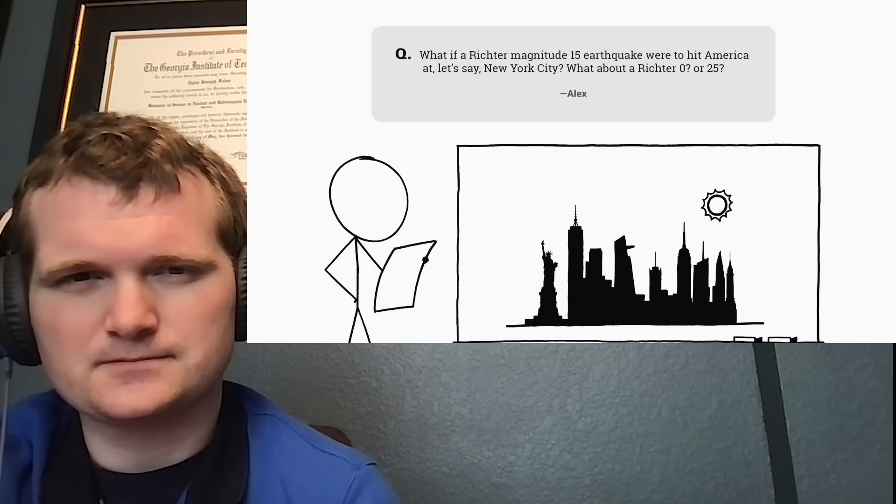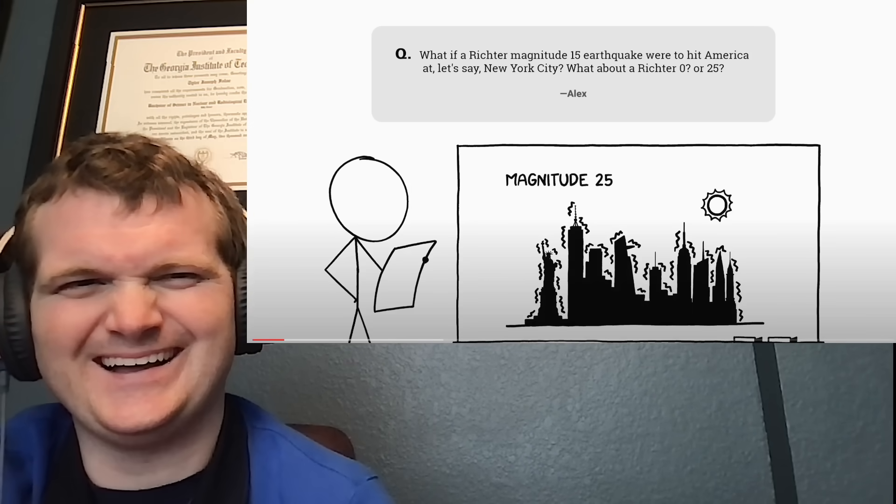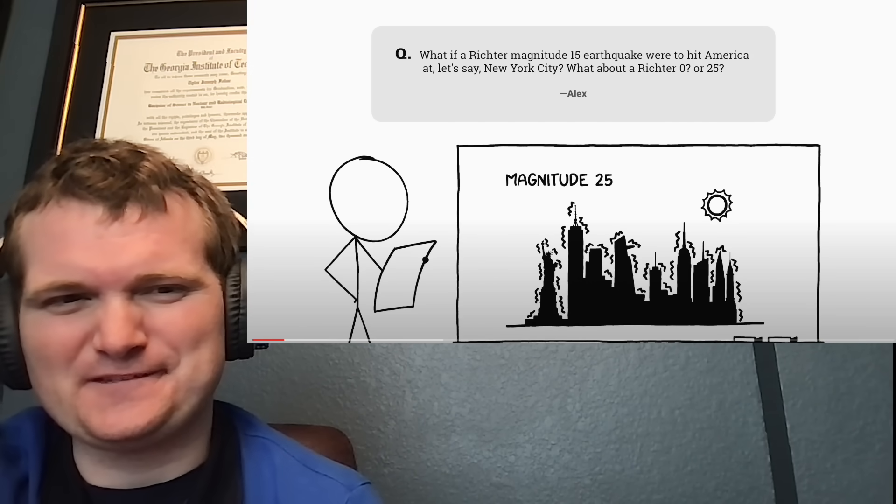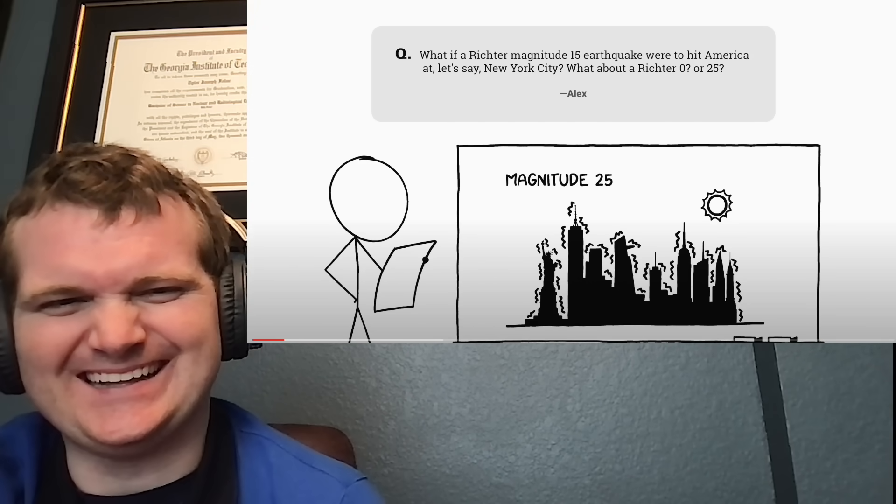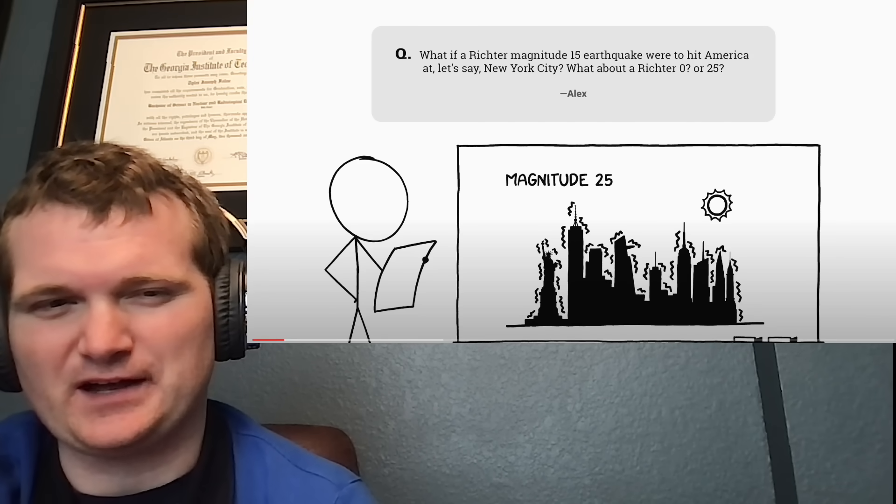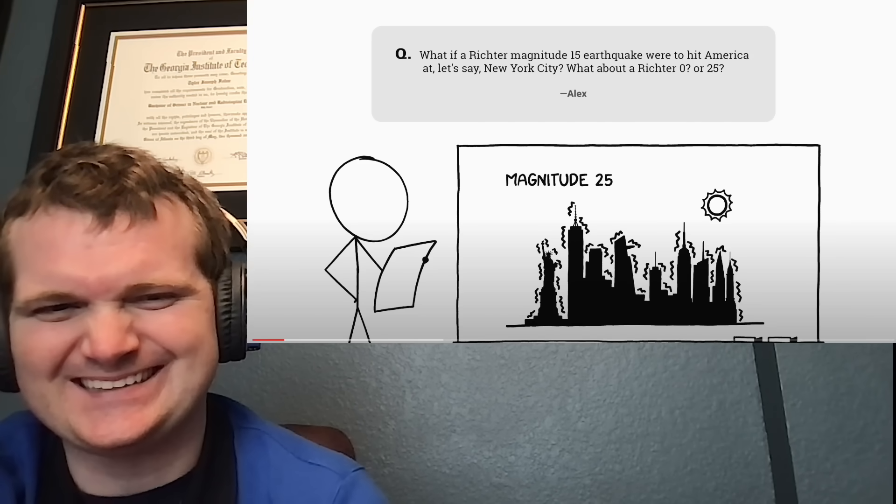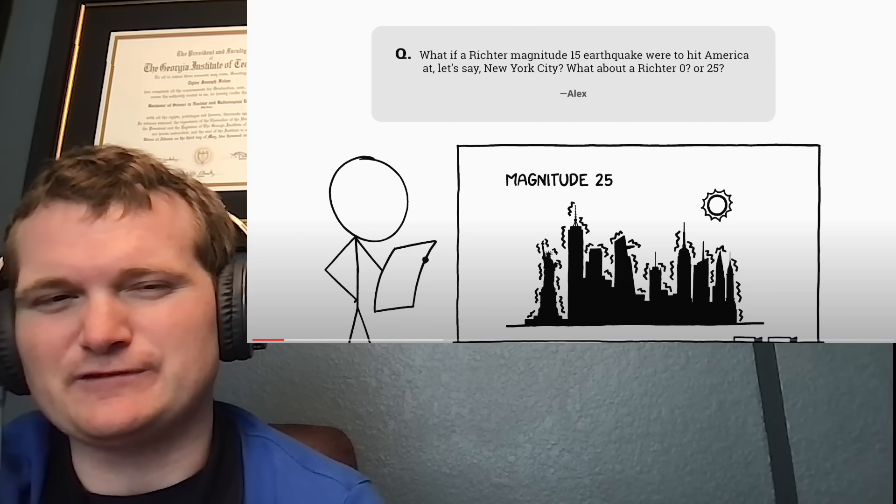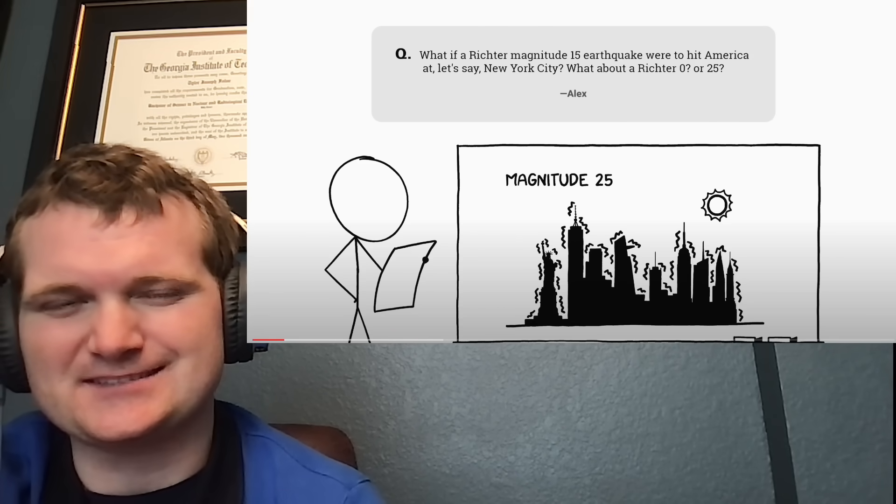This is a question from Alex who asks, what if a Richter magnitude 15 earthquake were to hit America at, let's say, New York City? What about a Richter 0 or 25? In New York City, good luck finding a fault line to even get you to 10. Zero would be tiny. 25, the Earth would not survive anything close to that, if you could somehow get it that high. So I guess a 25 earthquake wouldn't really make a whole lot of sense.